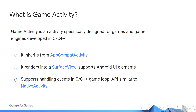Game Activity is an Activity specifically designed for games and game engines developed in C++. It inherits from AppCompatActivity, allowing you to use Jetpack components architecture and still use newer features of the platform on all Android devices. It renders into a SurfaceView, which allows you to interface with any Android UI element. It handles events like the Activity class does, allowing Android UI elements such as TextBox, WebView, or an ad or form to work as usual. It exposes the events to your game using a C interface and makes them easier to consume in your game loop. It offers a C API similar to NativeActivity.